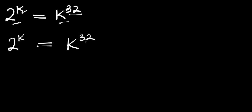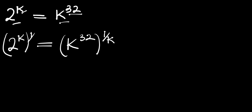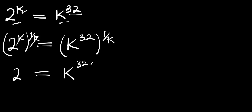We can decide to multiply this exponent by 1 over k, and we do the same thing here by 1 over k. By doing that, this k will eliminate this k, so we are going to have 2 equals k raised to the power of 32 divided by k.